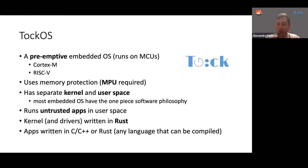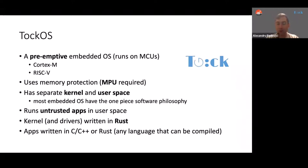An important feature of TalkOS that makes it unique in the MCU operating system space is that it has a separated kernel. Just like Linux, which has the Linux kernel with applications on top, TalkOS has the TalkOS kernel written fully in Rust, compiled and loaded separately on devices. On top of the kernel, we have user space applications, which can be written in any language as long as it compiles for the platform and is loaded separately to the board.